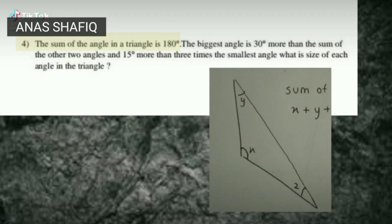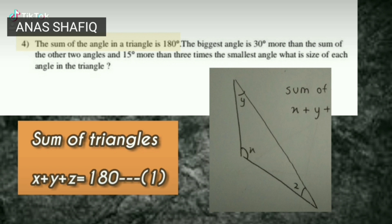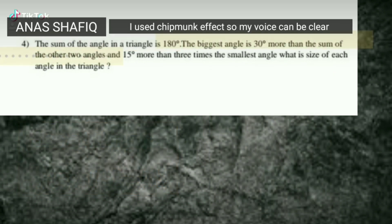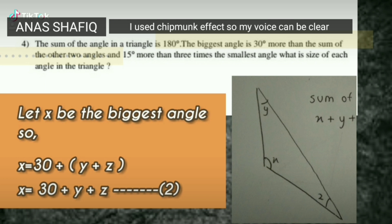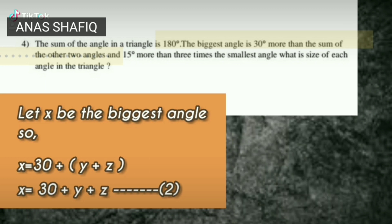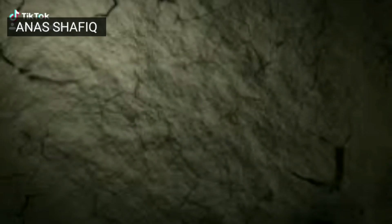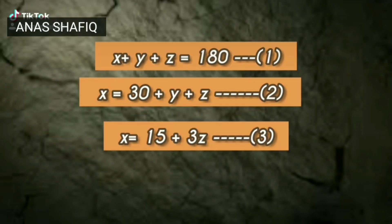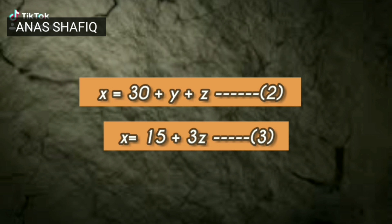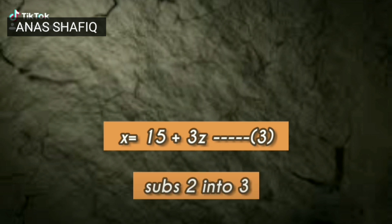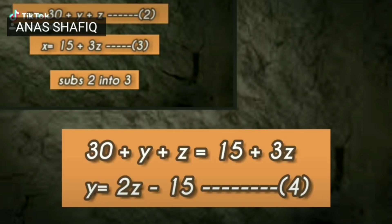The sum of a triangle: x plus y plus z equals to 180. For equation 1, equation 2: x equals to 30 plus y plus z. Equation 3: 3x equals to 50 plus 3z. We line up all the equations. Then, we substitute equation 2 into equation 3, and we get equation 4: y equals to z minus 15.